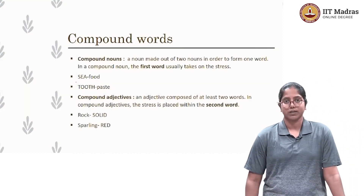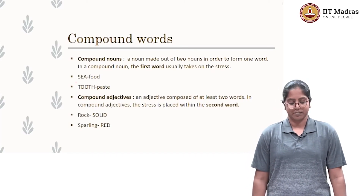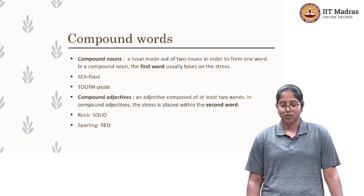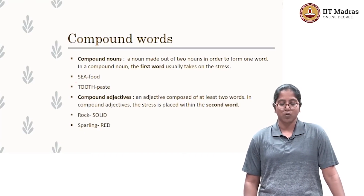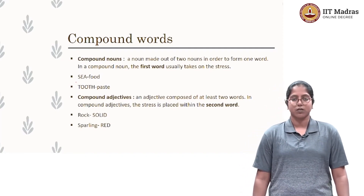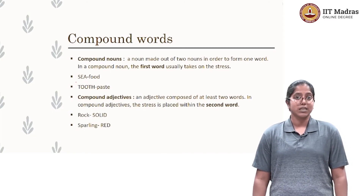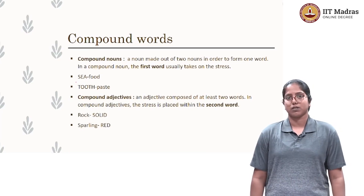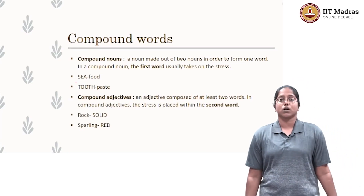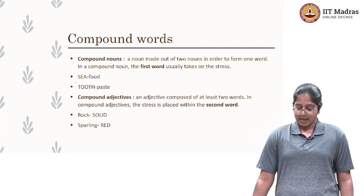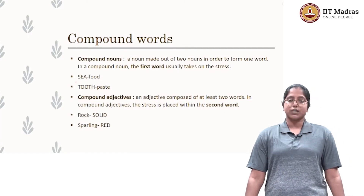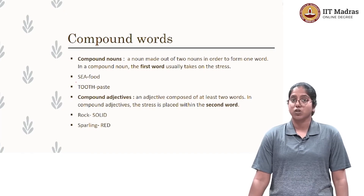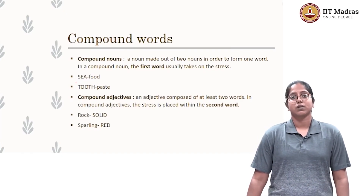Next is compound words — two words coming together to form a word. In compound nouns, the first word takes the stress. For example: seafood, toothpaste. In compound adjectives — an adjective composed of at least two words — the stress is placed on the second word. For example: rock solid, sparkling red.